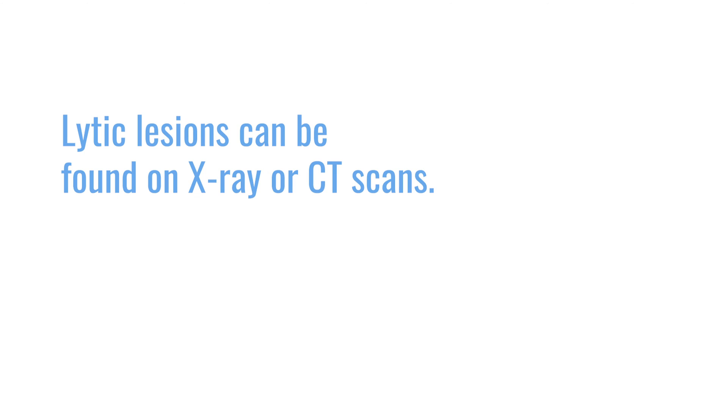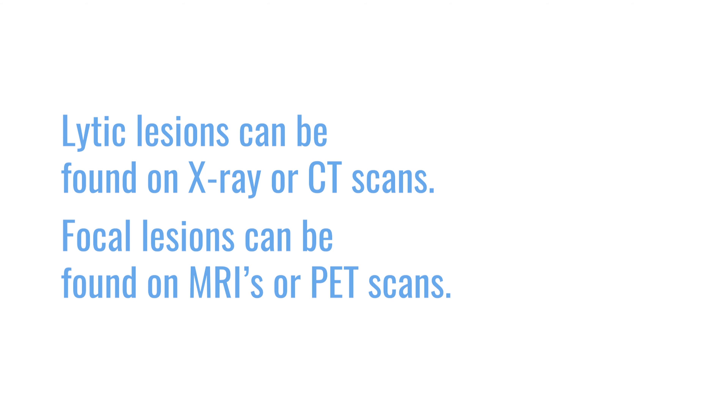Lytic lesions we would usually find on plain x-rays or CT scans, whereas focal bone lesions we would usually find on MRI scans or PET scans, which have the ability to see into the bone marrow and find collections of abnormal cells that are presumably plasma cells.